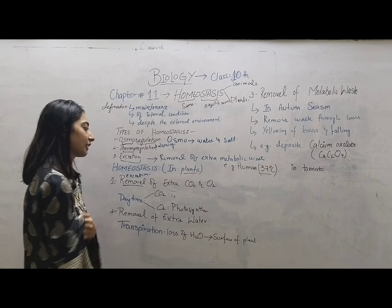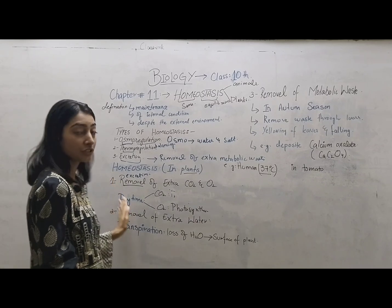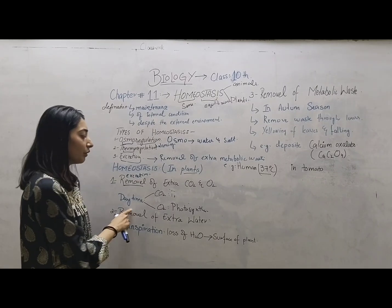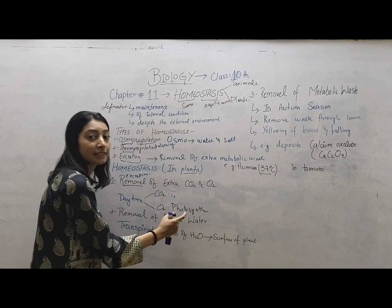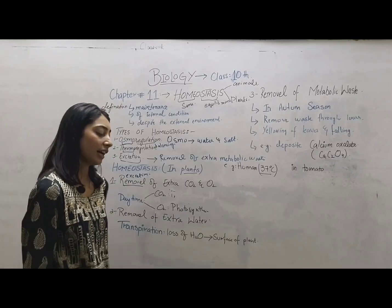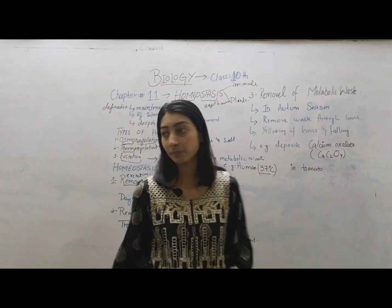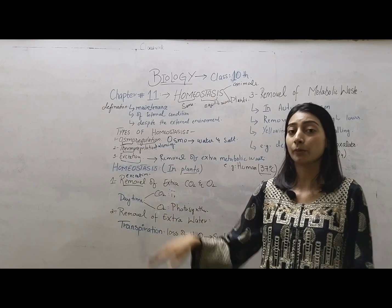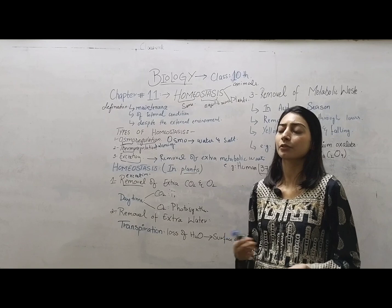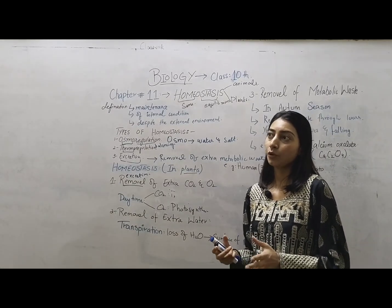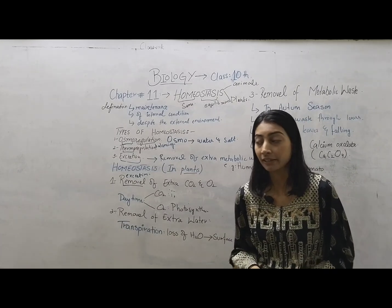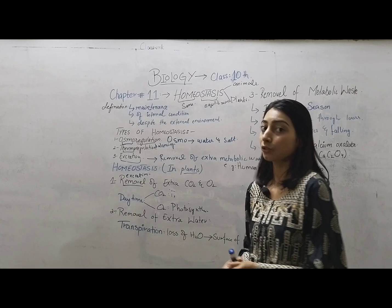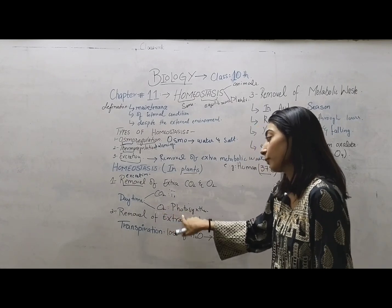Next is homeostasis in plants. The first process is the removal of extra carbon dioxide and oxygen. During daytime, when plants produce oxygen through photosynthesis, the amount of oxygen increases. They remove excess oxygen in daytime through stomata. Other processes through the stem are not used because stomata are more efficient. The more leaves a plant has, the higher the amount of stomata.